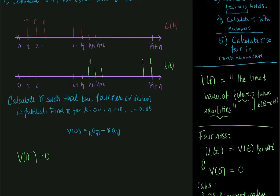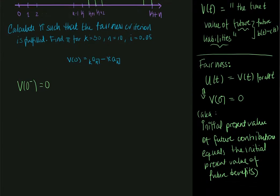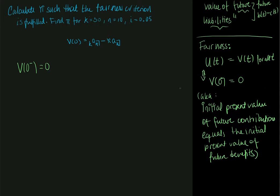Now how can we determine pi according to the fairness criterion? Well, we have a fair contract if v(0-) is equal to 0. So that is if in our case, v(0-) is just equal to v(0).